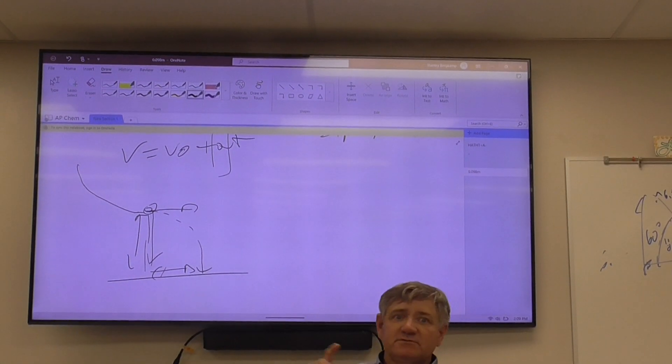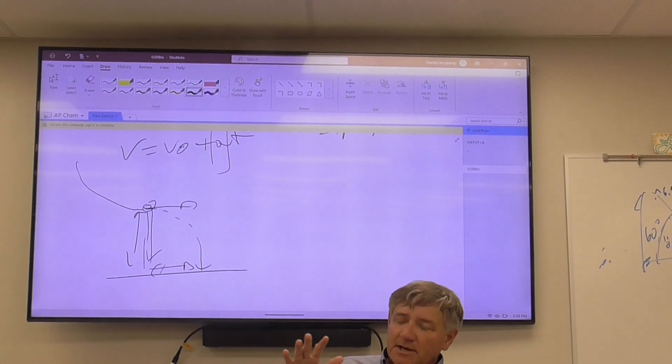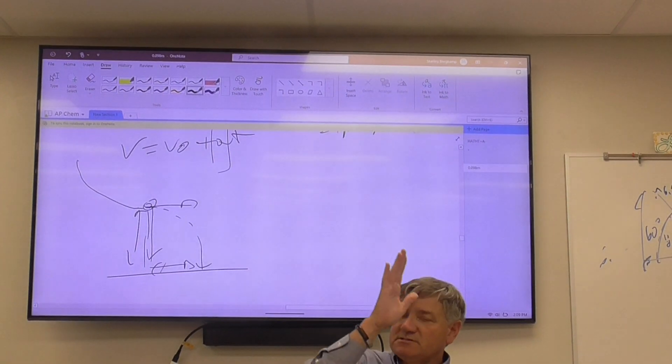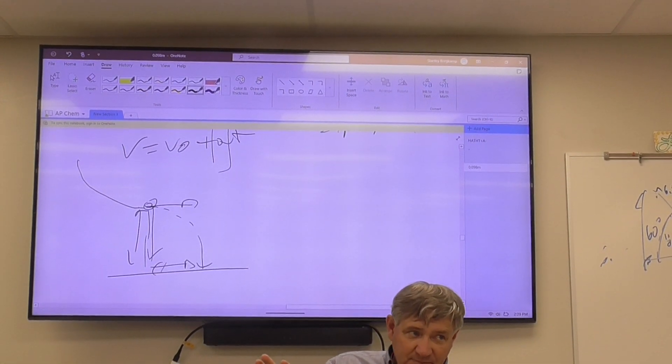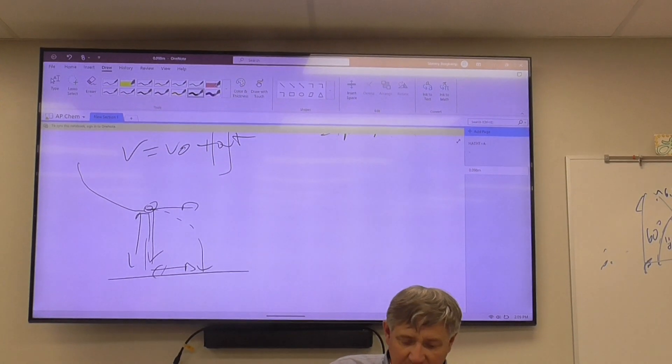Label them in different colors, do a solid line, do a dash line, I don't care. But keep in mind, this is after it has left the ramp. This is not while it's rolling, okay? This is after it has turned into a projectile.